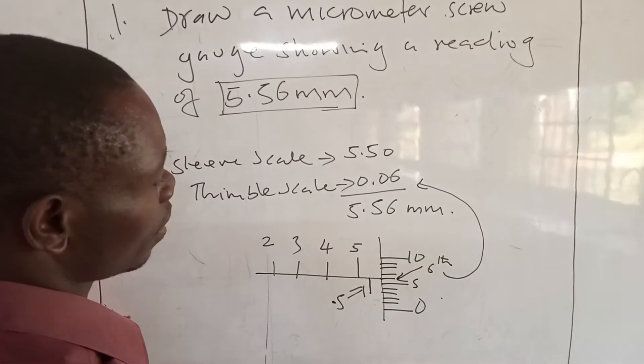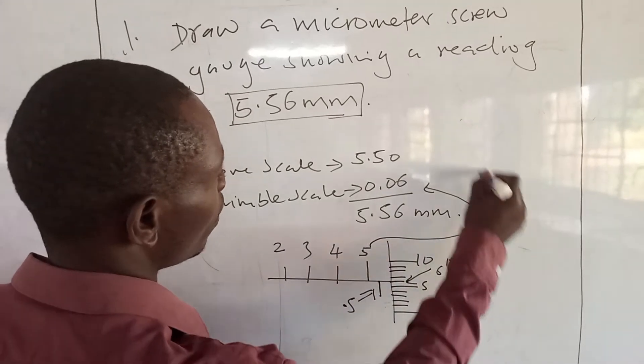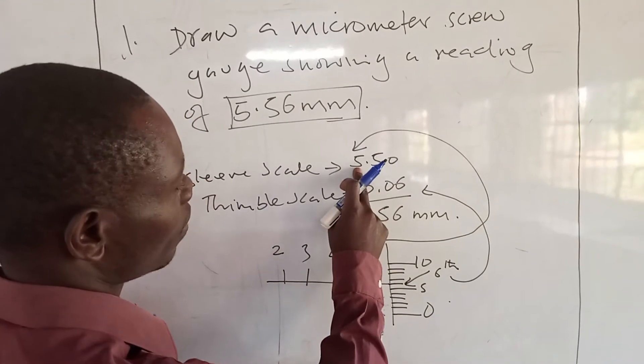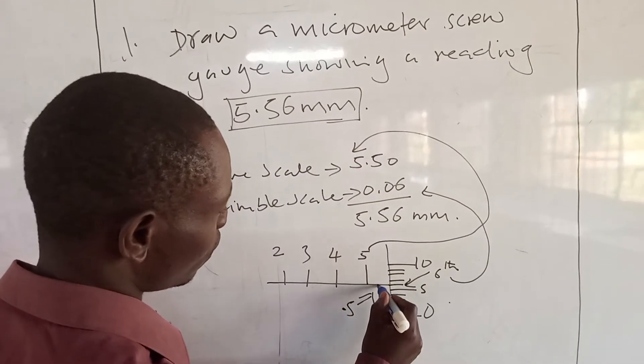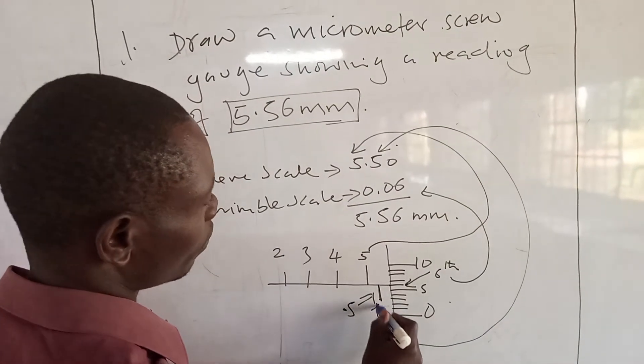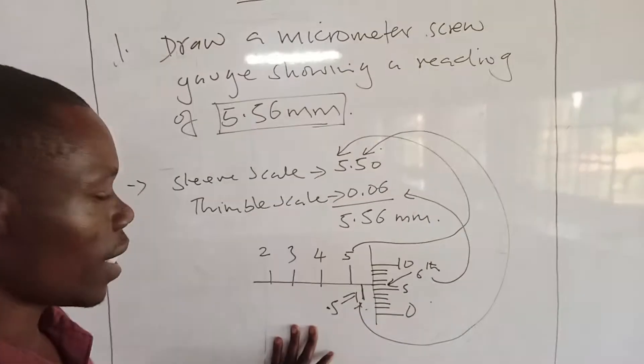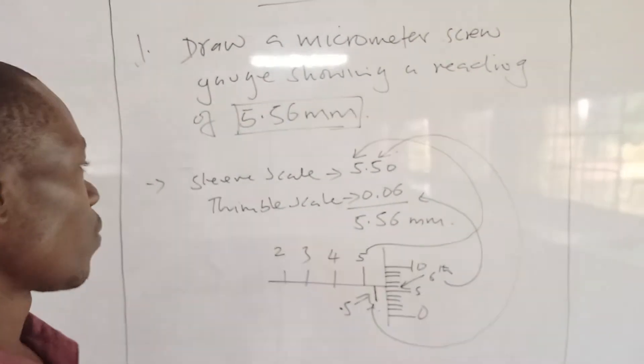So the mark here becomes the sixth mark which will give us 0.06, and then this mark here will be 5, and then this small division here will be 0.5. I think it is clear like this, so this is the best diagram. This is part one.